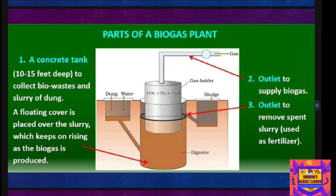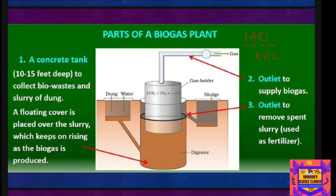Now we need to know about the parts of a biogas plant and how we can use it for the production of biogas. The technology of biogas production was developed in India mainly due to the efforts of the Indian Agricultural Research Institute (IARI) and the Khadi and Village Industries Commission. The biogas plant consists of a concrete tank, about 10 to 15 meters deep, in which bio-waste is collected and the slurry of dung is fed.